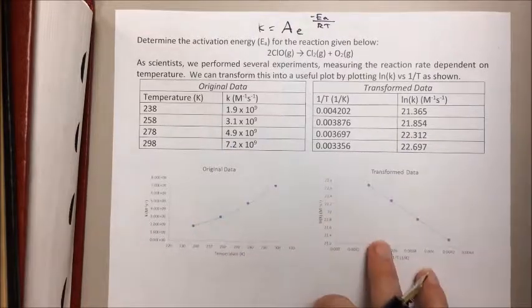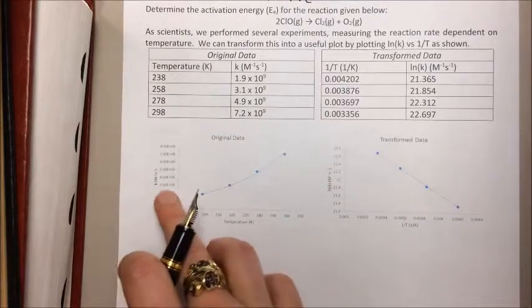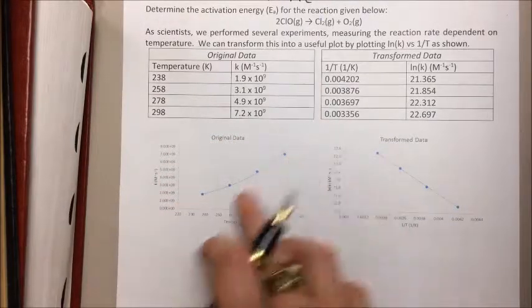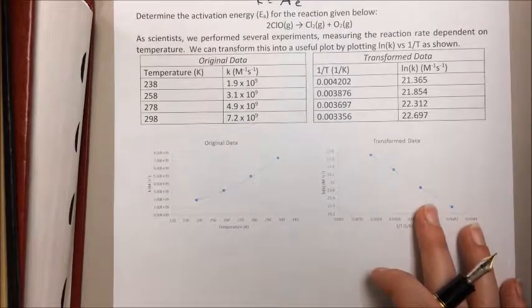In order to use this data, we plotted it originally. This is temperature versus reaction rate. You can see it's curved. The fact that it's curved means that it's harder for us to pull any useful info out of it.